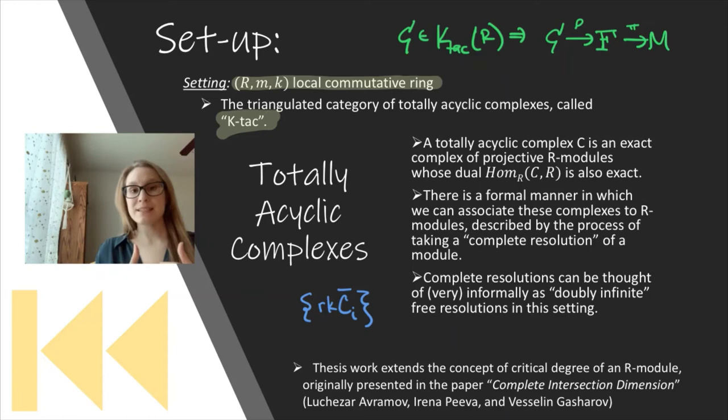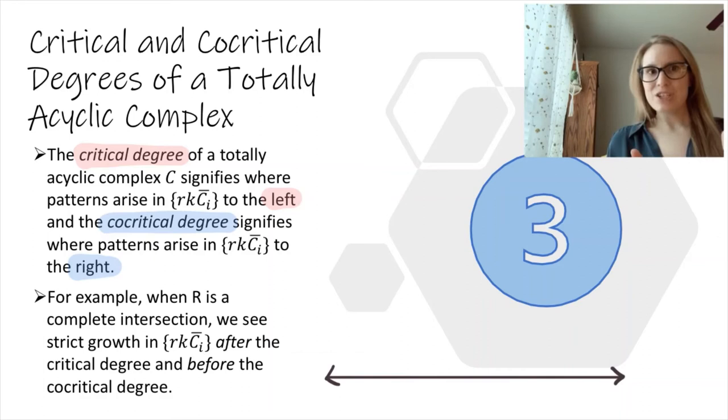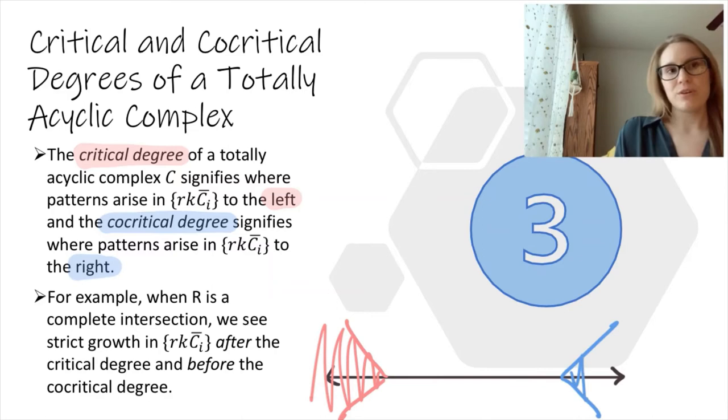My thesis work extends the concept of critical degree for an R module, originally defined in the paper Complete Intersection Dimension by Avramov, Gasharov, and Peeva. In regards to our extension, the critical degree signifies where patterns arise to the left in the complete Betti sequence, and the dual concept of co-critical degree signifies where patterns arise to the right. For example, when R is a complete intersection, we see strict growth in the complete Betti sequence after the critical degree and before the co-critical degree.